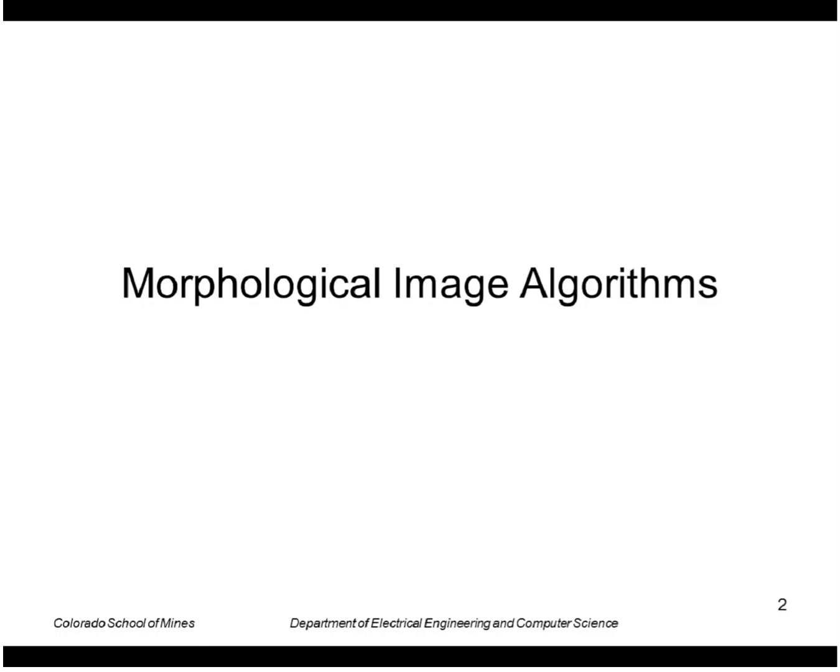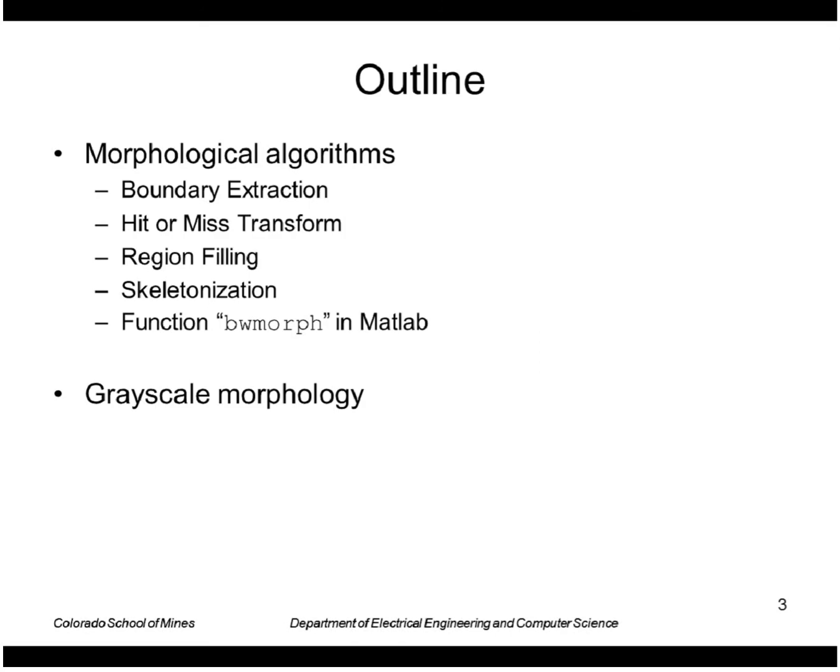I'm going to talk about some other morphological image processing algorithms. These include boundary extraction, hit or miss transform, region filling, skeletonization, and just as a side these are all implemented using the single function bwmorph in MATLAB. And finally wrap up with the extension of the morphological image processing algorithms to grayscale images.